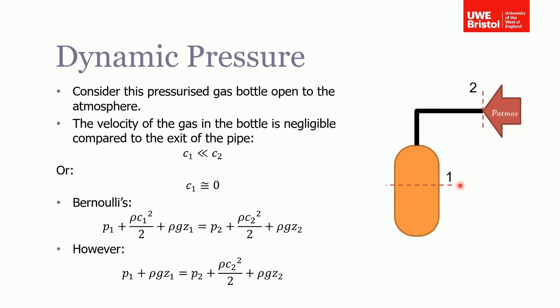The gas is flowing out of this bottle. Because there is pressurized gas in here, this is like a reservoir. If we assume this is quite a large cylinder, the velocity of the gas in this pipe will be much less than the velocity of the gas exiting the pipe into the atmosphere.